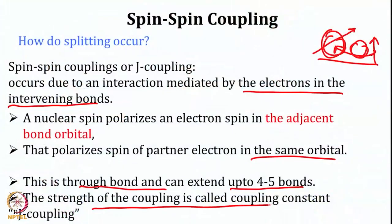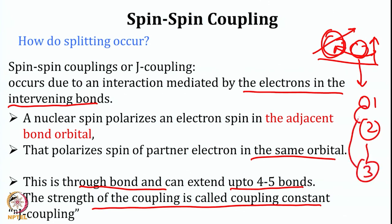This is through bond and can extend up to 4 to 5 bonds, but as you go farther and farther, the strength of that effect decreases. Therefore the J coupling becomes smaller and smaller as we move further away. The strength of the coupling is called the J coupling constant, or J coupling.